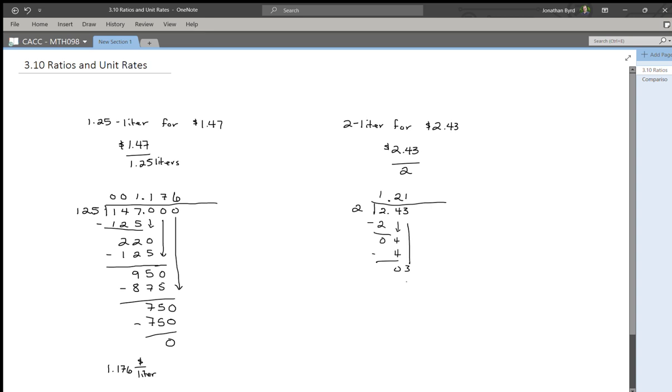One time. One times 2 is 2. Three minus 2 is 1. Bring down a zero. Two goes into 10 five times. Five times 2 is 10. Ten minus 10 is zero. So here the unit rate is $1.215 per liter.